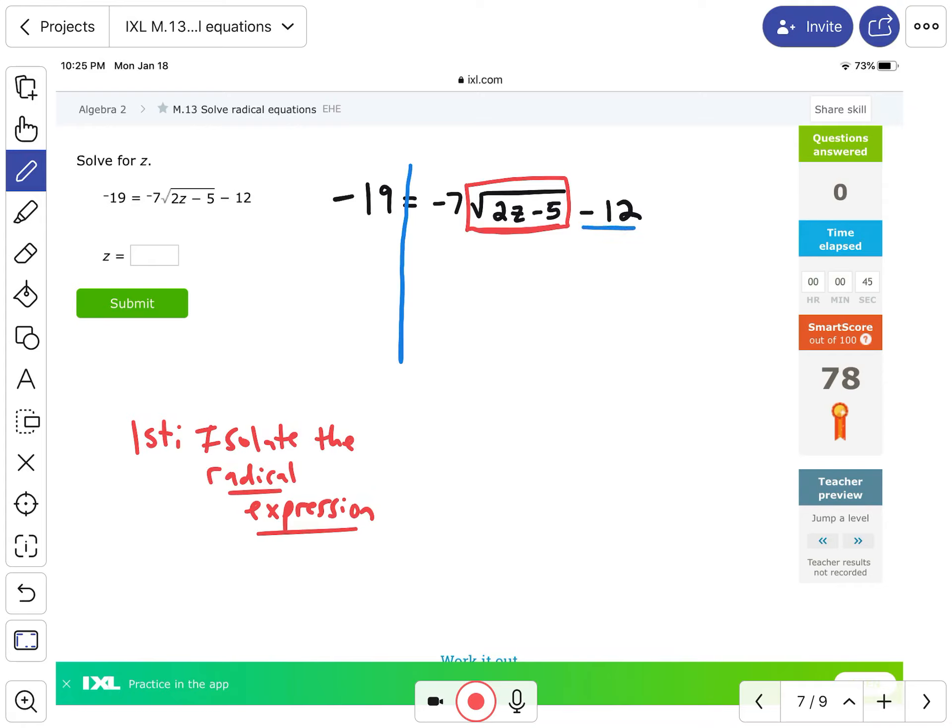We got to get rid of this minus 12 and we got to get rid of this negative 7 that's multiplying to it. If you're doing PEMDAS in the reverse order, you're solving that way. So we're gonna go ahead and get rid of the negative 12 first because that comes on the bottom of PEMDAS, so we start there. I'm going to add 12 to both sides.